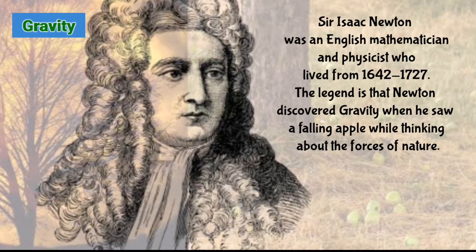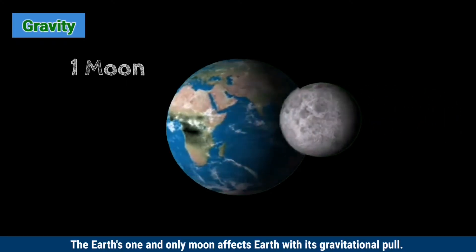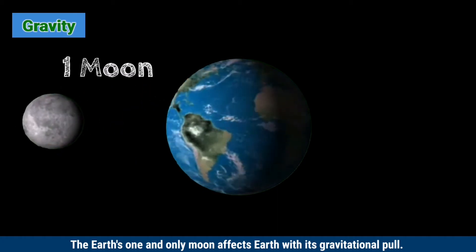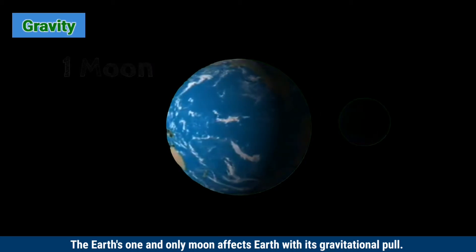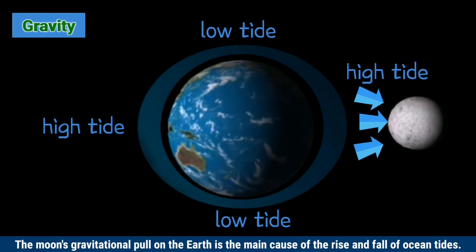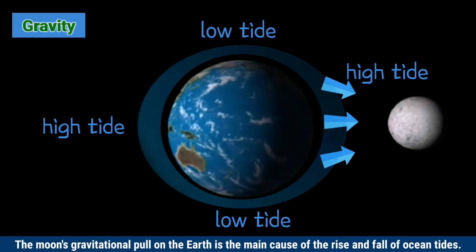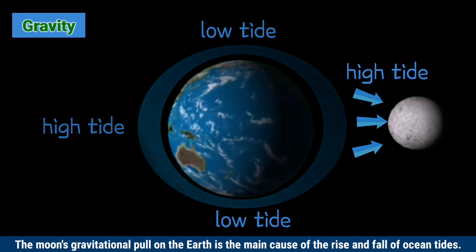Sir Isaac Newton was an English mathematician and physicist who lived from 1642 to 1727. The legend is that Newton discovered gravity when he saw a falling apple while thinking about the forces of nature. The Earth's one and only Moon affects Earth with its gravitational pull, which is the main cause of the rise and fall of ocean tides.